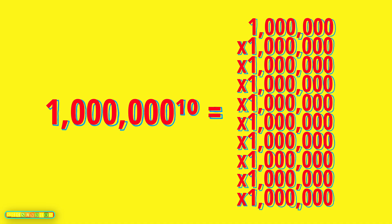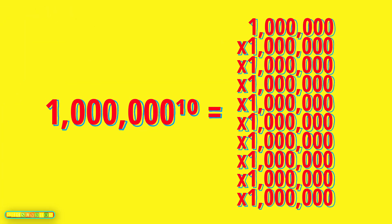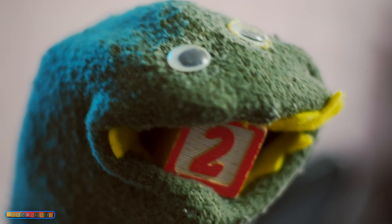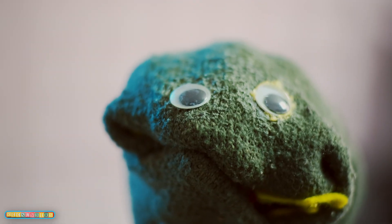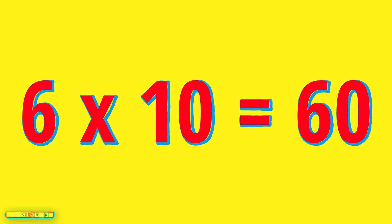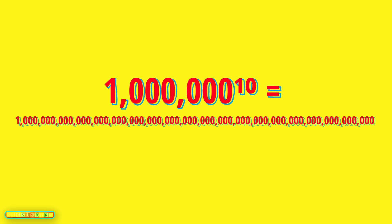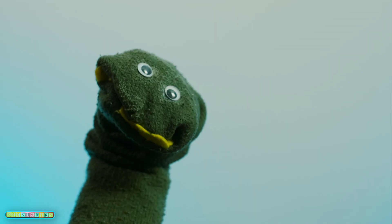1 million to the 10th power means 1 million times 1 million times 1 million — ten copies of 1 million multiplied together. Six times 10 is 60, so this giant number is a 1 followed by 60 zeros. We have a name for that number, covered in the bonus section for students in the Greater Gators class.